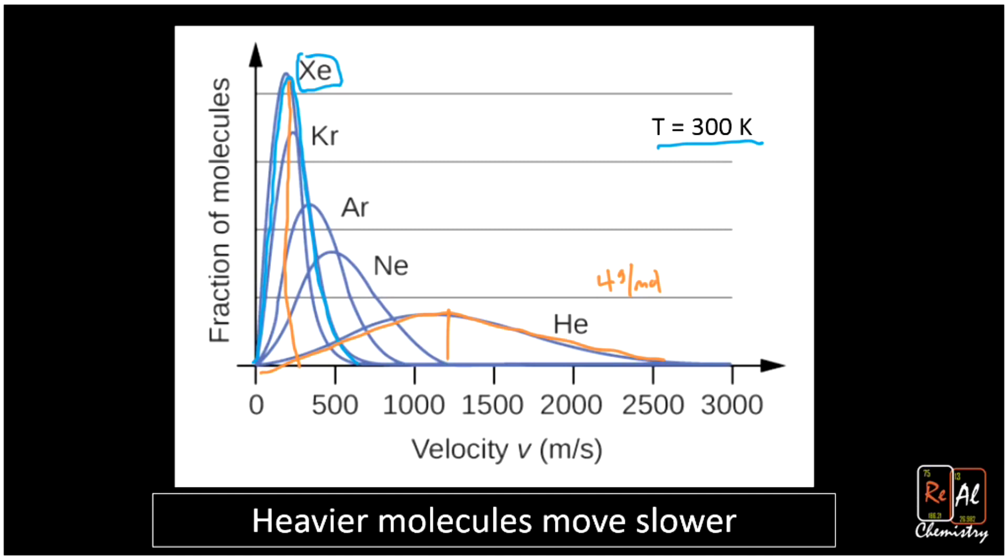This is kind of like a tractor trailer and a motorcycle being given the same amount of energy. Because the temperature is 300 Kelvin, helium and xenon are getting the same amount of energy. Say you give a tractor trailer and a motorcycle a gallon of gas to get to the highest speed they can get to. That motorcycle is going to get to a way faster speed because it's lighter, so there's less mass for that gas to accelerate. The 18-wheeler is going to be going much slower because it has a lot more mass to accelerate.